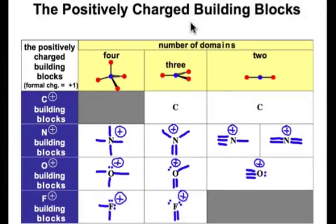Alright, so how'd you do? These are the positively charged building blocks of nitrogen, oxygen, and fluorine. We'll take care of positively charged carbon, an exception to the octet rule, in the next webcast.